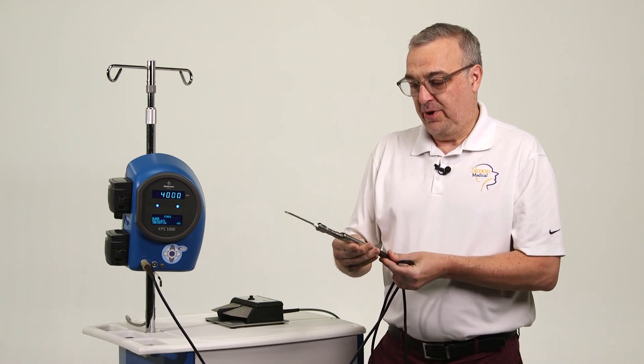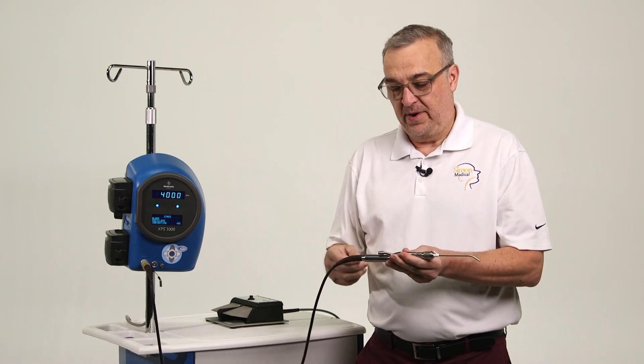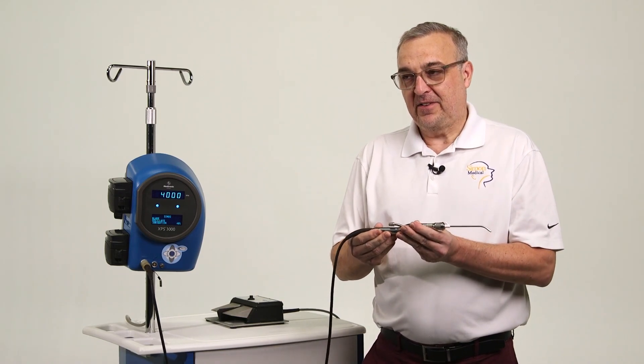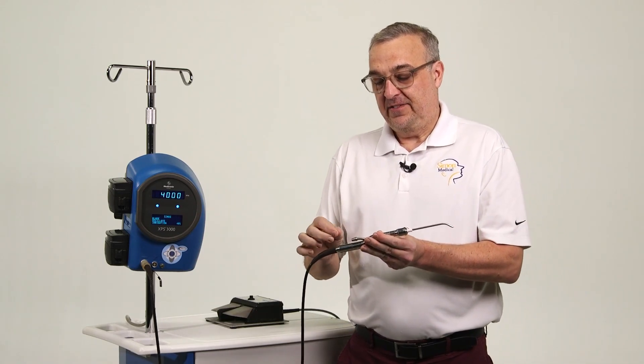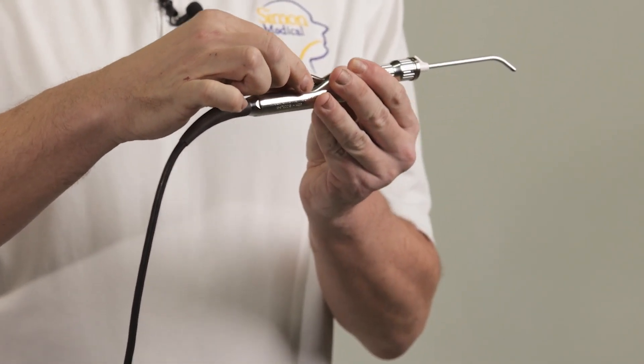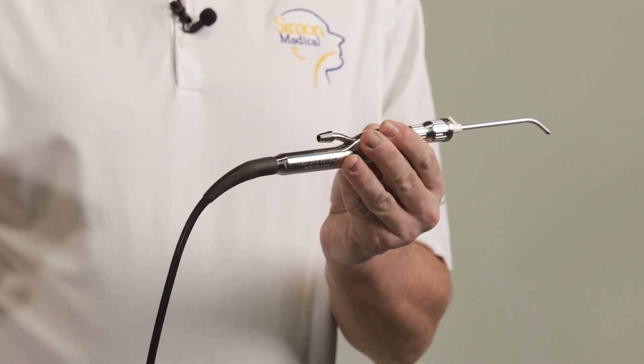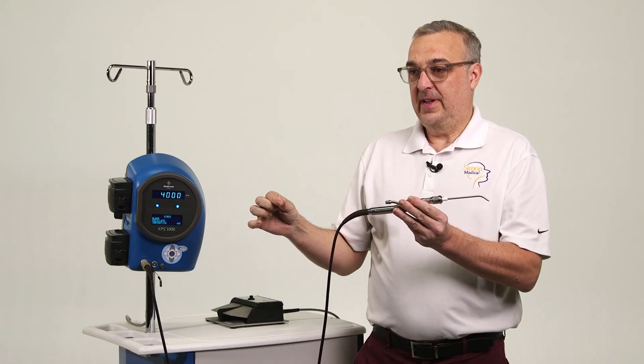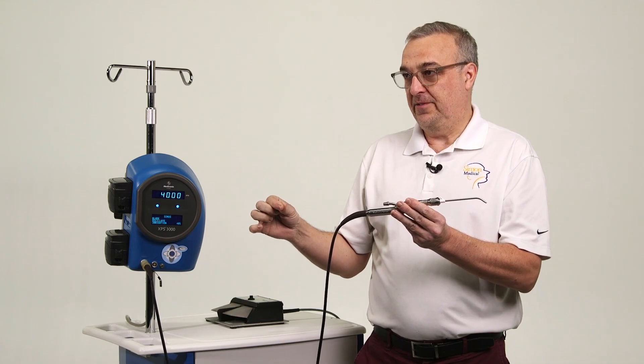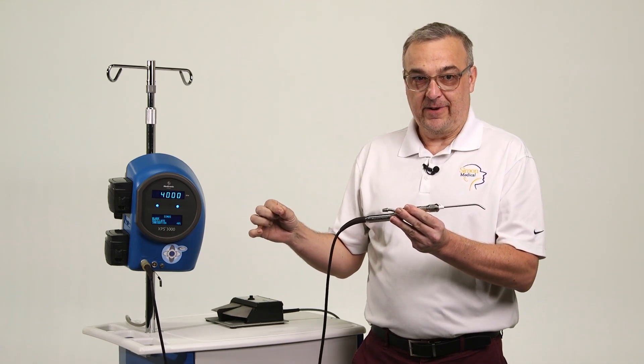With the microdebreeder, one of the very important aspects of not having a clog is having good suction. So your suction is going to go in here, make sure your suction's on as full power as you can tolerate.